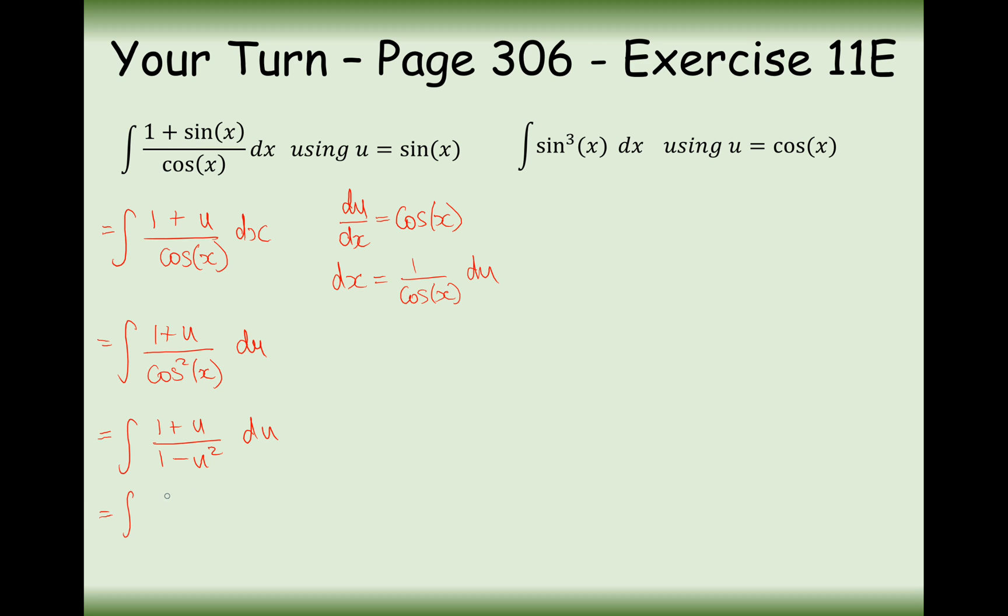The next thing we'll do here is we will factorise the bottom. So 1 plus u over 1 plus u, 1 minus u. Cancel out the 1 plus u's on the top and the bottom. And now all we're doing is we're integrating 1 over 1 minus u du.